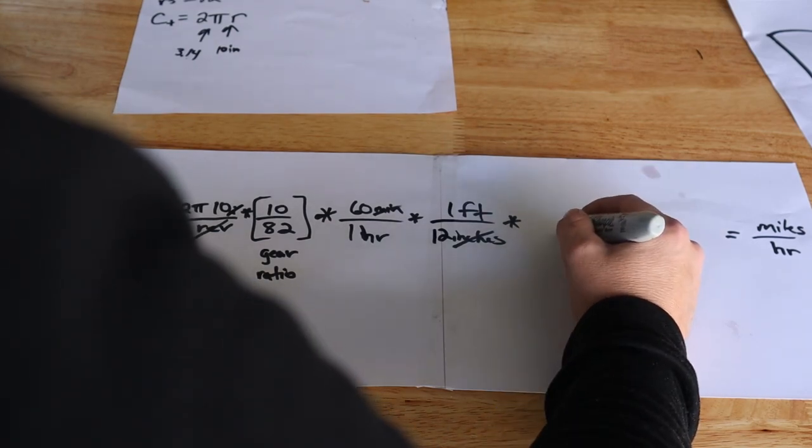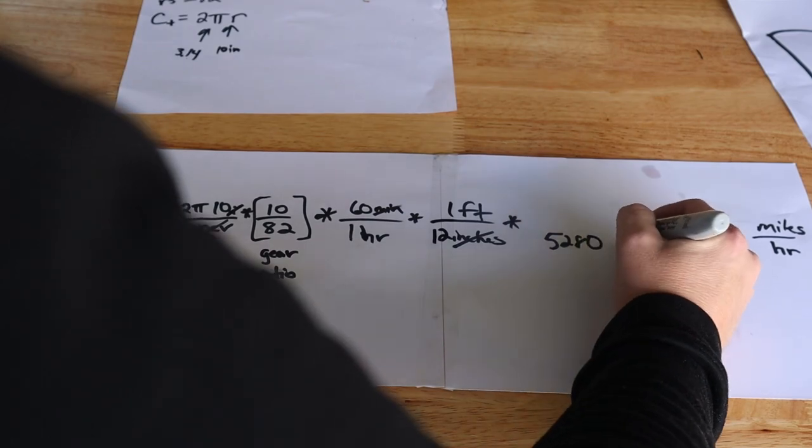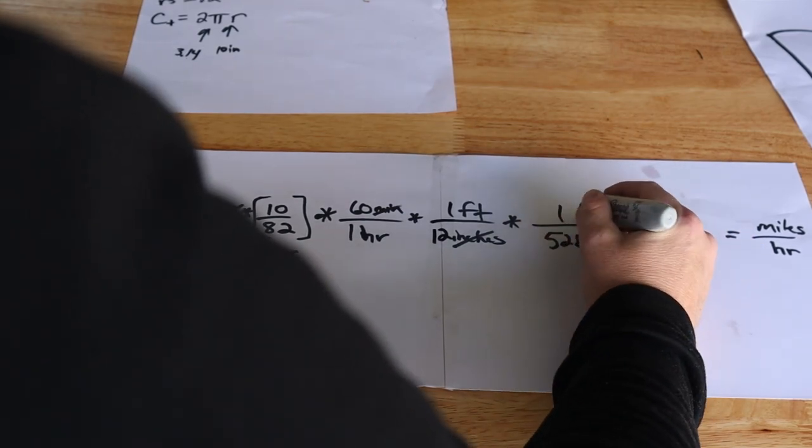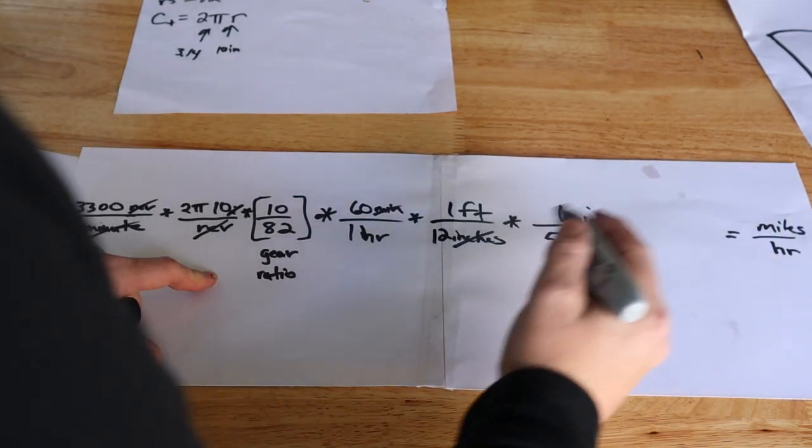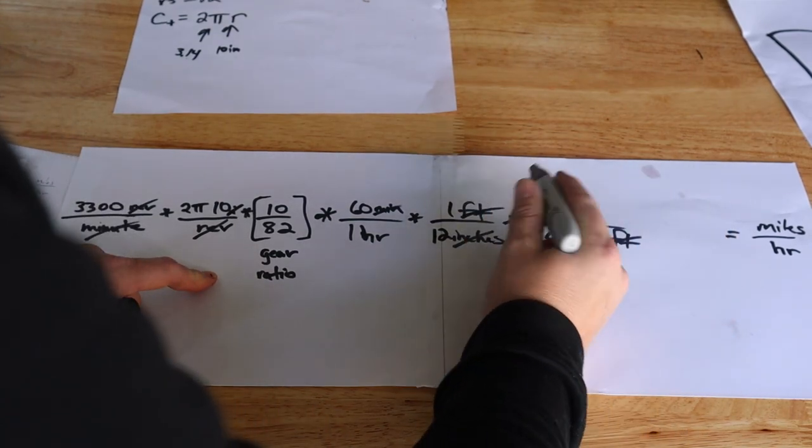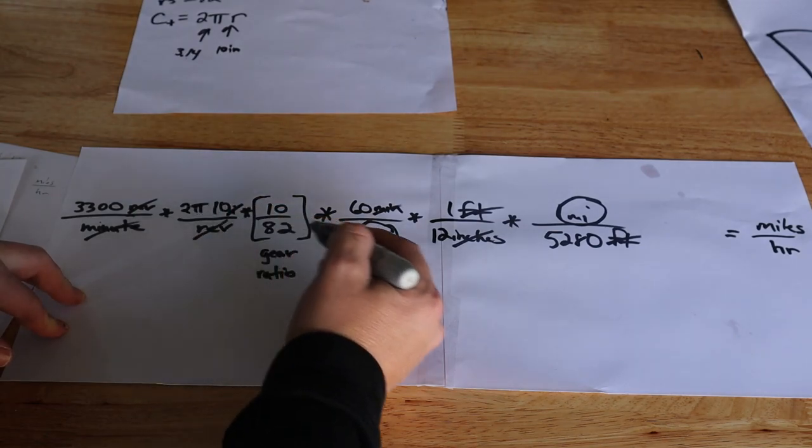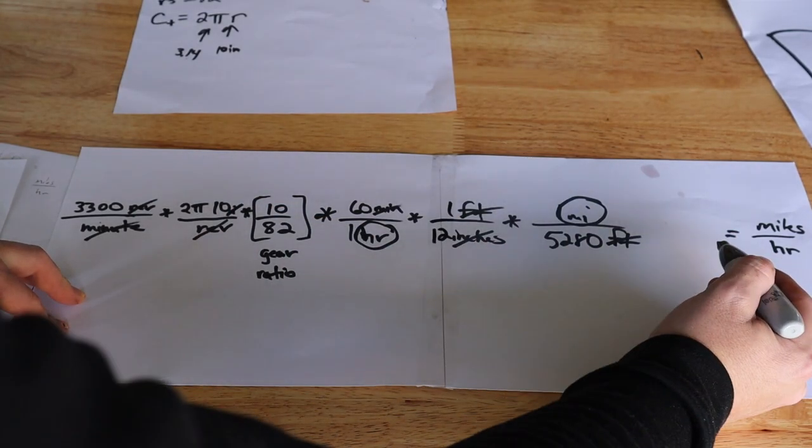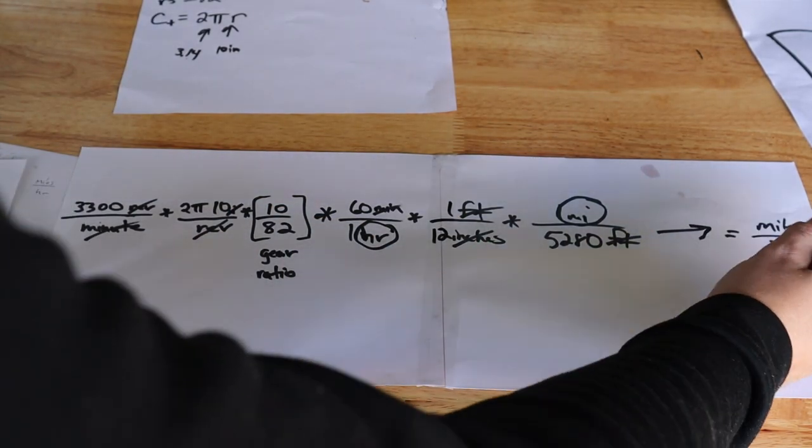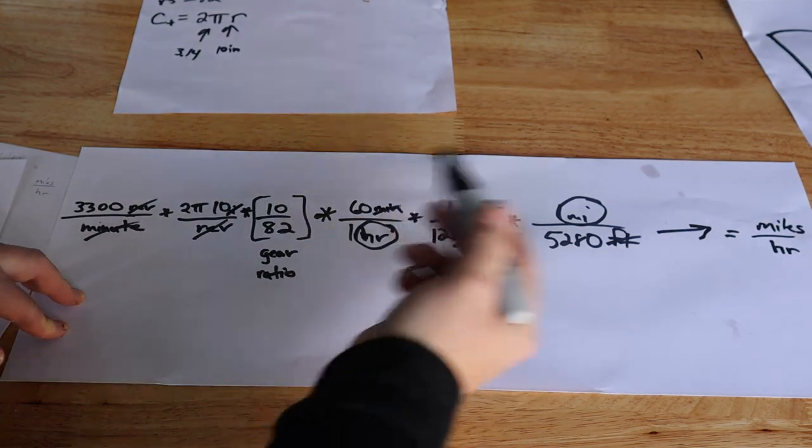In order to get this to cancel out, 5280 feet and one mile. Then we have the feet cancel out and we're left with miles per hour. That's a dimensionally accurate equation, so we know we're going to come out with our miles per hour. Now we just have to do the math.